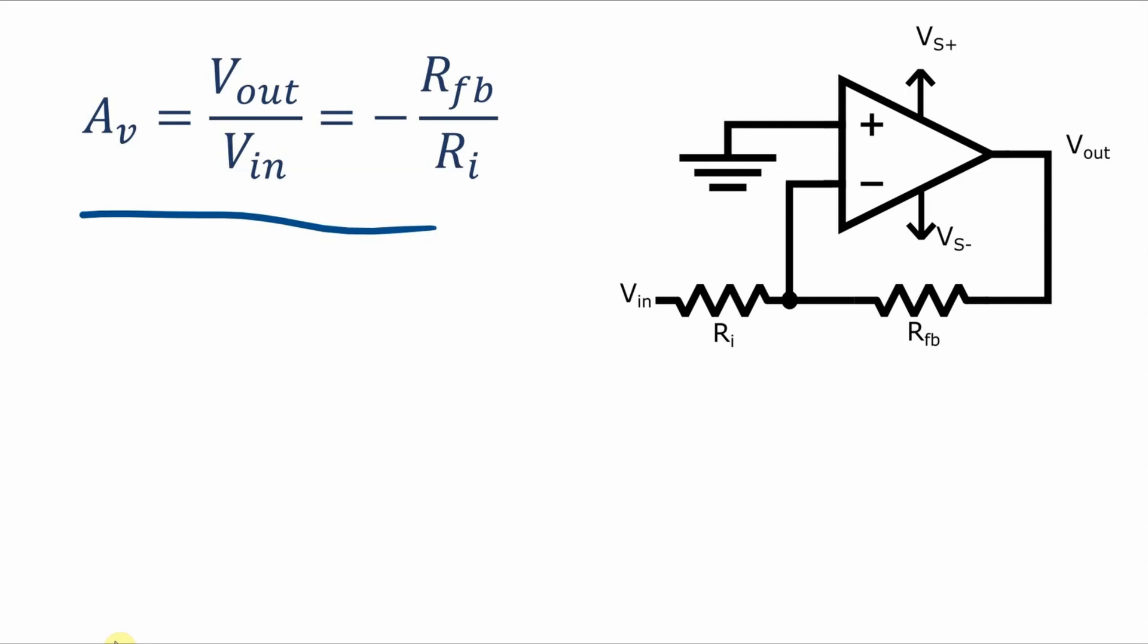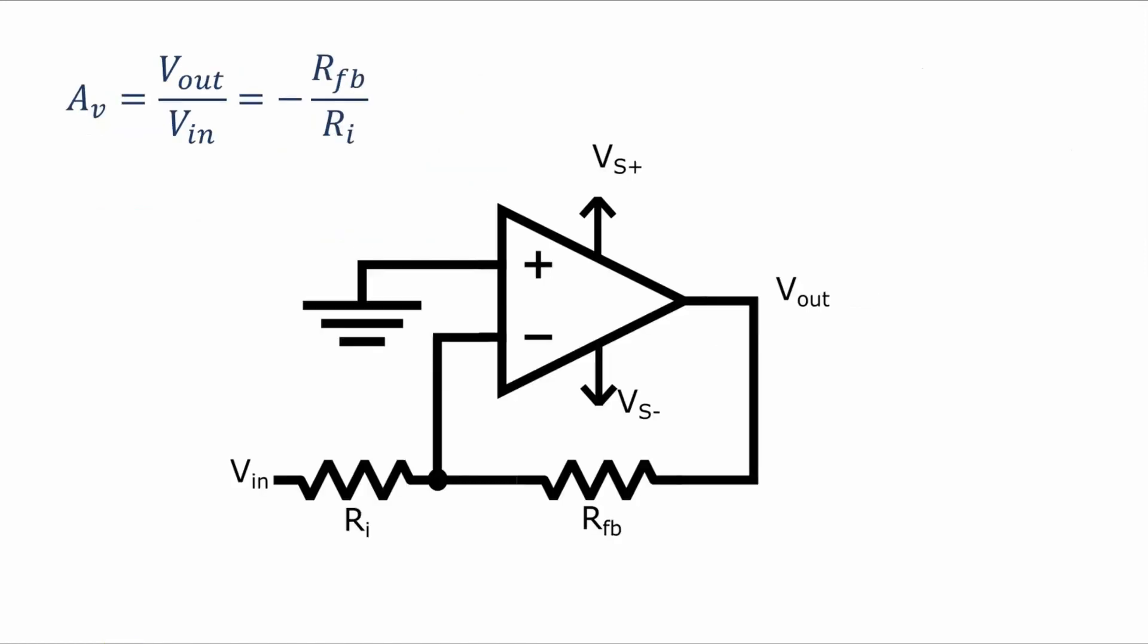For us here in the video, let's take this equation and put it to practical use on a simple circuit. So let's say we have this circuit here and the feedback resistor is 10 kilo ohms and the input resistor is 5 kilo ohms.